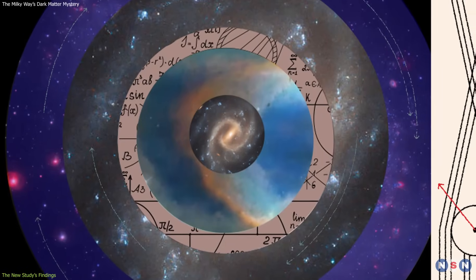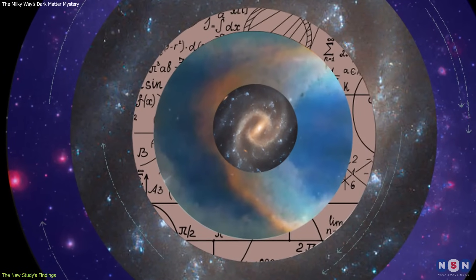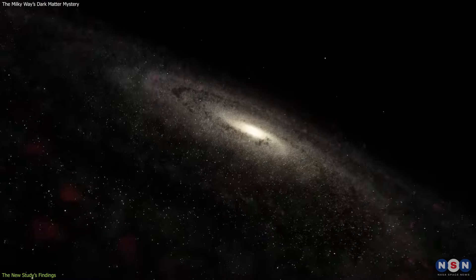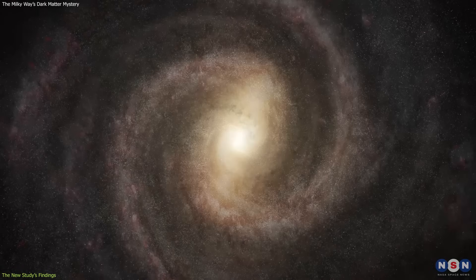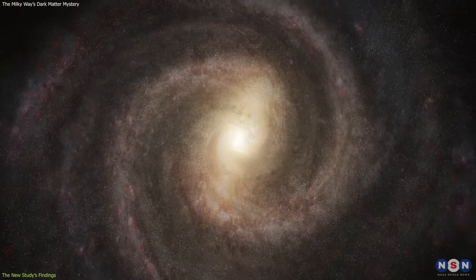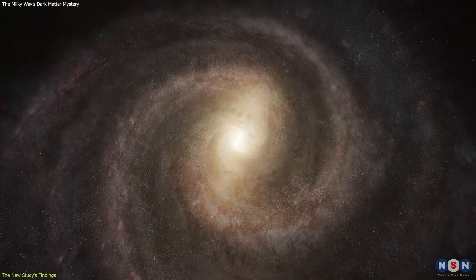This is surprising, because according to the standard model of the galaxy, the stars at the edge should be moving faster, due to the gravitational pull of the massive core, which is assumed to contain a lot of dark matter.